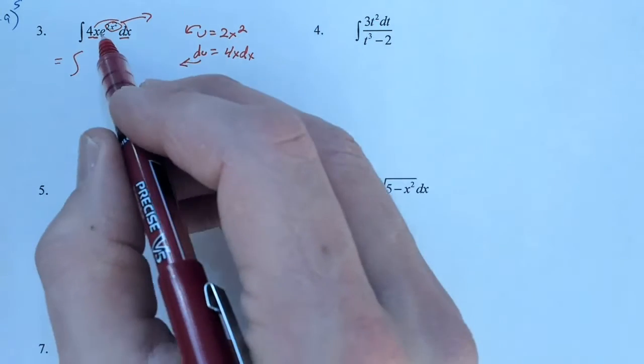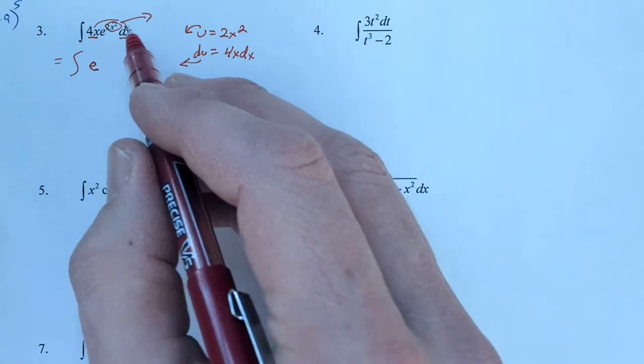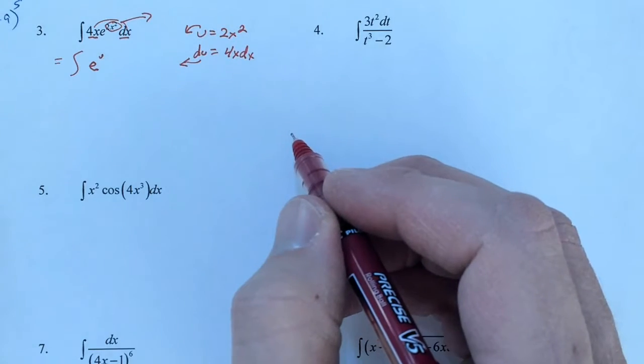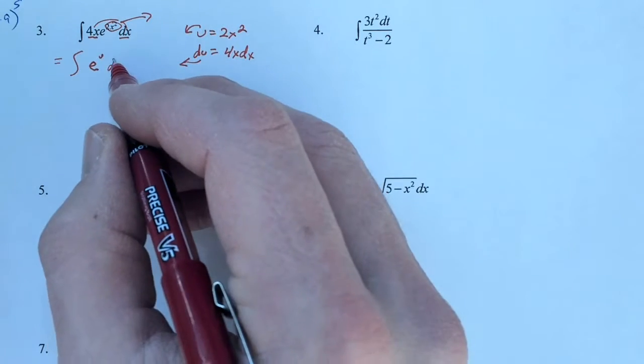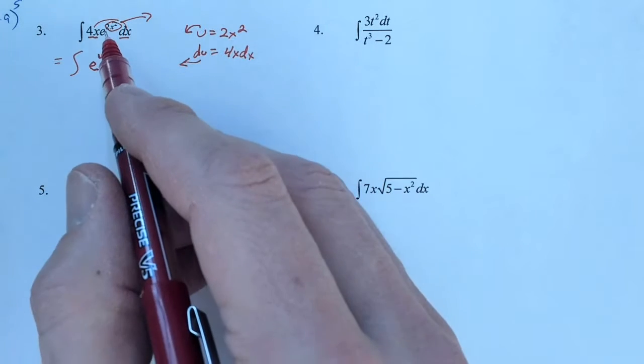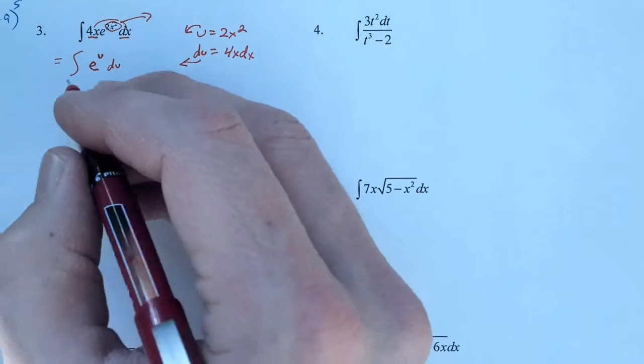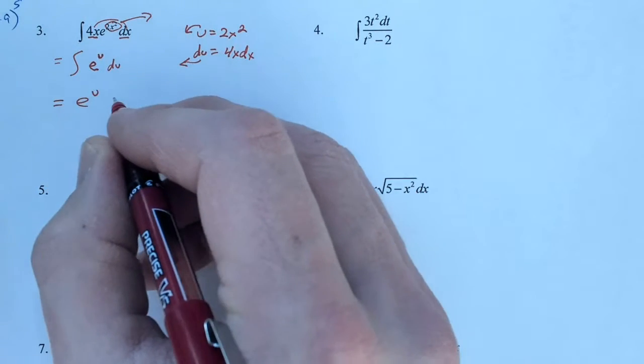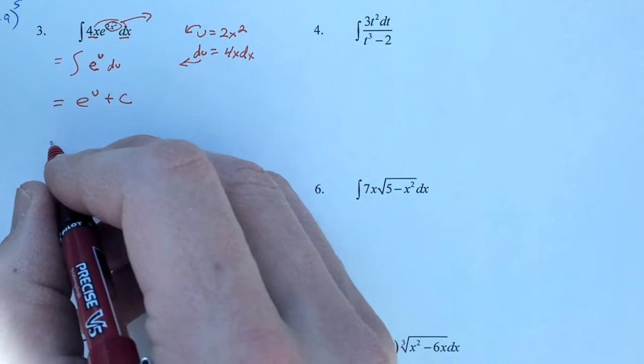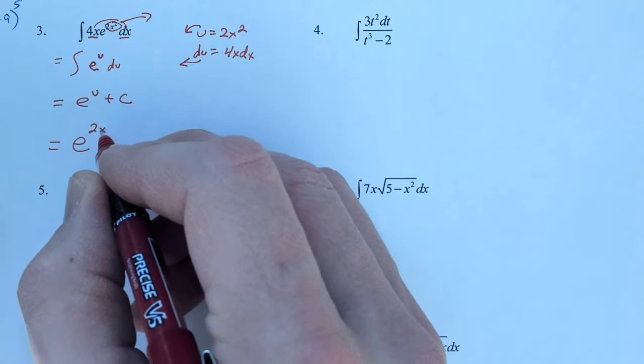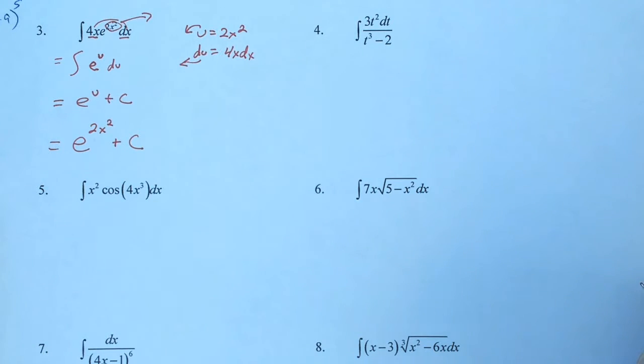So we still have the antiderivative. e was never touched, so that's still there. 2x squared is going to be replaced with u. And the 4x and the dx are gonna be replaced with du. So by substitution, we take this product and we turn it into this very simple antiderivative. We know that e to the u antiderives to itself, plus the arbitrary constant. And then finally, we just place x back in for u. So we have e to the 2x squared plus c.